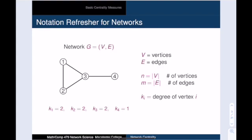As a reminder, here are some of the symbols that we will use. Our network, G, consists of a vertex set V and an edge set E. Here, G stands for graph, which is the mathematical name for a network. We use n to denote the number of vertices, and m to denote the number of edges of the network. The symbol k_i is the degree of vertex i, that is, the number of edges incident with vertex i.